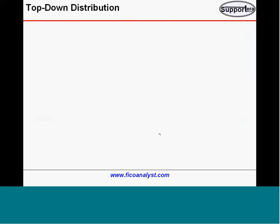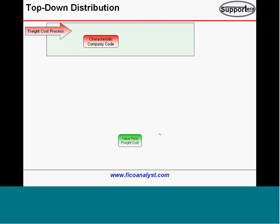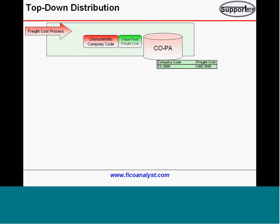Let us look at what happens. When you are entering the freight cost, normally you will post at company code level with the freight cost — nothing else at this level. So, if company code is 3000 and freight cost is 3000, the COPA values are just company code and freight cost. The COPA report for freight cost before distribution is available at company code level only. If I ask, can I know this 3000 by customer? It will say no — it is impossible because you did not capture it.